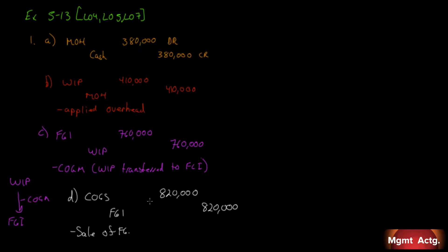We've identified the reasons for A through D. Number two: the company allocates any balance in the manufacturing overhead account to the other accounts in proportion to the overhead applied during the year in the ending balances in each account. This is where it gets a little tricky — it's hard to explain in words until we actually do one.